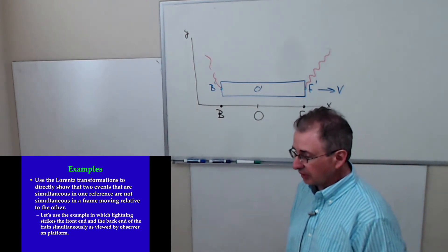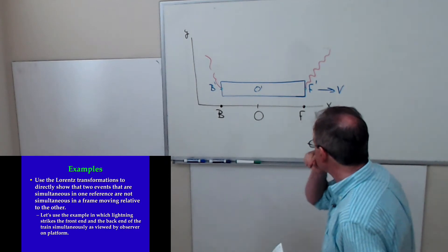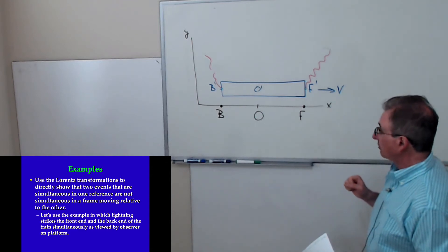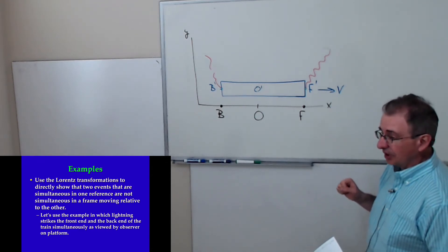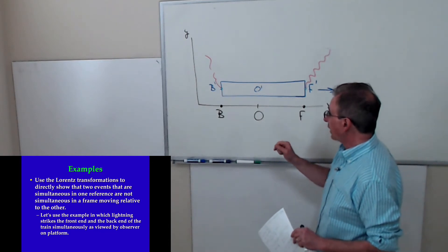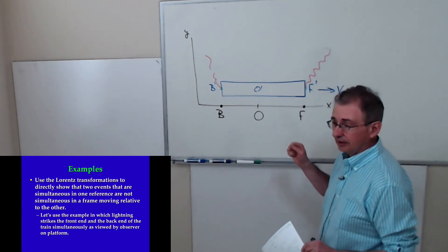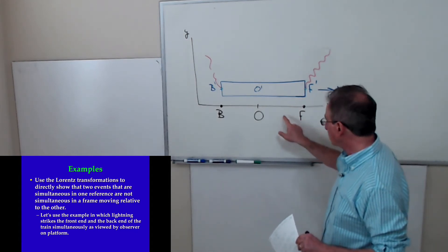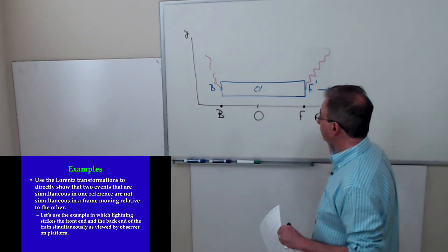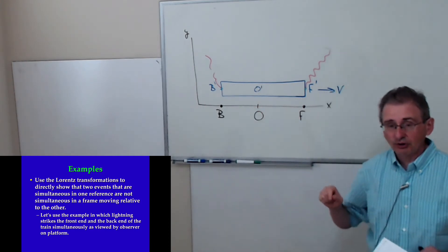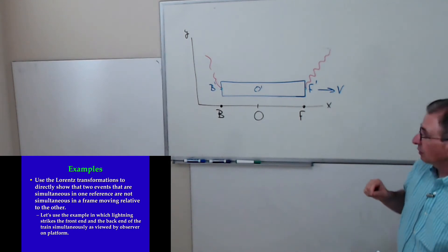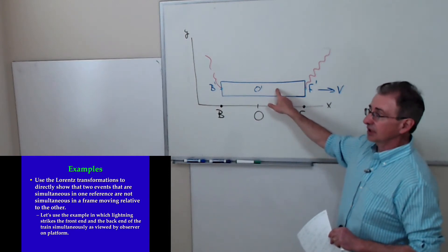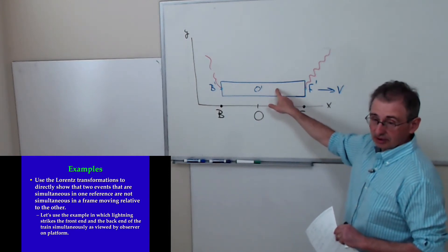We want to use the example we've been using in class where you have a railroad car going by a platform. At some instant in time, lightning strikes the front end and the back end at the same time as viewed by an observer on the platform. So the person on the platform sees the lightning strike the front and the back end of the train at the same time. What we're going to show is that the person in the moving frame, the prime frame, does not see them as occurring at the same time.